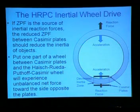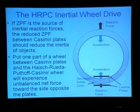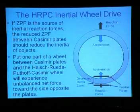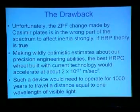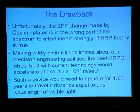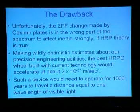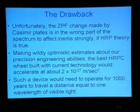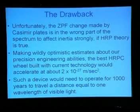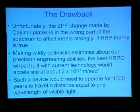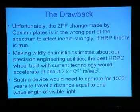That leads us to what I've labeled the Heisch-Rueda-Puthoff Casimir inertial wheel. If the ZPF is the source of inertial reaction, the reduced ZPF between Casimir plates should reduce inertia. So you put plates on one side of the wheel, you get a reduced inertial reaction force, and the wheel accelerates away from the side with the plates. Unfortunately, the ZPF change made by Casimir plates is in the wrong part of the spectrum to affect inertia very strongly. Making wildly optimistic estimates about precision engineering, the best HRPC wheel with current technology would accelerate at 2×10⁻²⁷ meters per second squared — requiring a thousand years to travel a distance equal to one wavelength of visible light. This is not a practical drive.